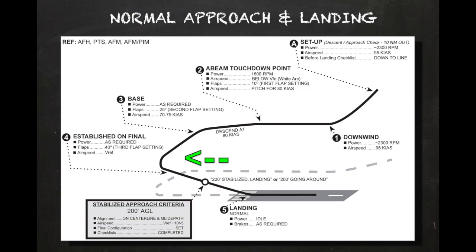An approach is considered stabilized if all of the following conditions have been met by 200 feet AGL. Number one: the aircraft is properly positioned for landing and requires no unusual maneuvering or large corrections to continue to the intended touchdown point — essentially, on the proper glide path and aligned with the extended runway centerline. Number two: the approach speed or V-Ref is within plus 10 knots and minus 5 knots of the target reference speed. Number three: the airplane is properly configured for landing. Number four: the before-landing checklist has been completed in its entirety. If any criteria is not met by 200 feet AGL, a go-around must be initiated.